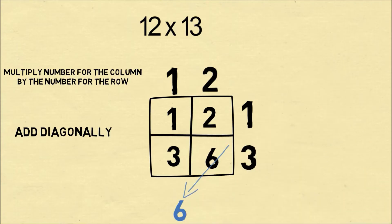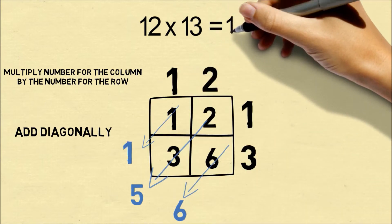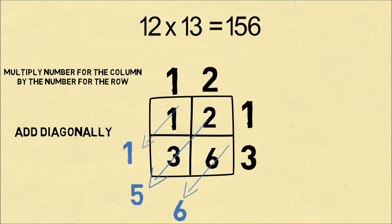Now we add up the numbers diagonally. So the first diagonal is 6, then 2 plus 3 is 5, and our final diagonal is just 1. And that's our answer of 156.